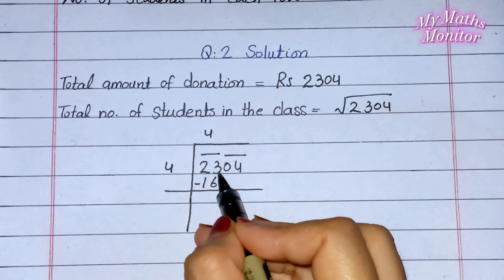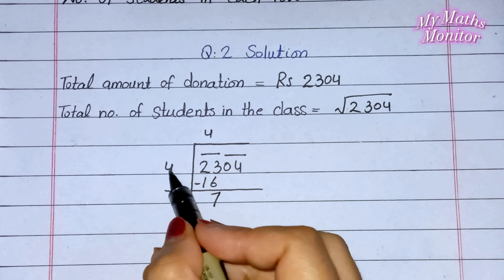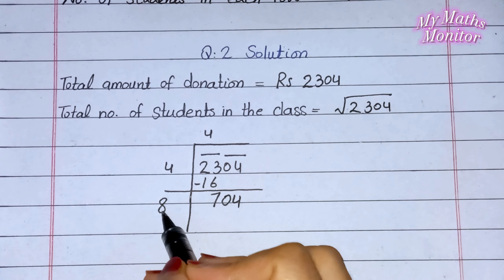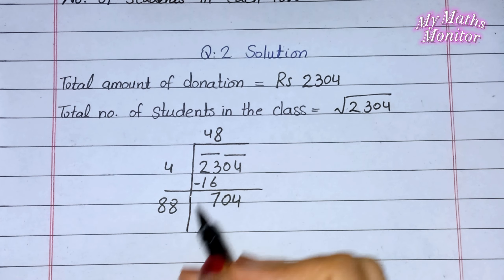Class کے طالب علموں کی تعداد معلوم کریں گے — 2,304 کا square root نکالیں گے۔ 3 کو carry دیں گے، 13 میں سے 6 کو minus کریں گے، remaining value 7۔ 4 میں 4 add کریں گے 8، complete pair write کریں گے 04۔ 88 کو multiply کریں گے 8 کے ساتھ: 88×8=704، remaining value 0۔ Number of students in class — یہاں پہ find out کیا — class میں طالب علموں کی تعداد ہے 48۔ It is the answer.